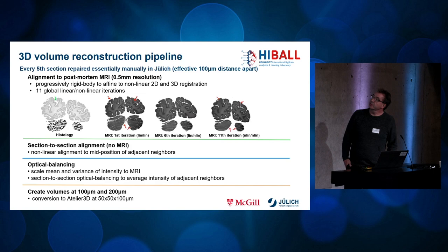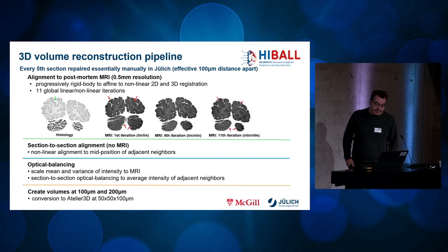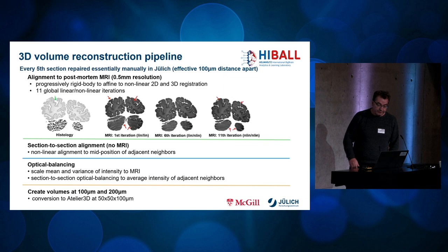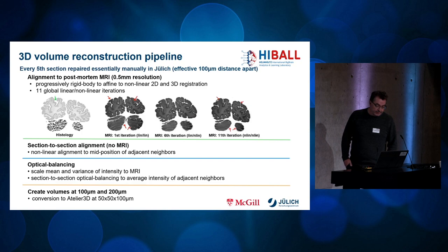For the computation of the 3D reconstruction, every fifth section repaired in Jülich was used, which effectively corresponds to a layer spacing of 100 microns. A critical first step was to align with the post-mortem MRI scan at a resolution of 0.5 millimeters. The process started with a rigid body alignment and then progressed to fine and non-linear 2D and 3D registration steps. To achieve the desired precision, 11 global iterations, both linear and non-linear, were required. The figure on the right shows how the MNI dataset was aligned step-by-step in 2D and 3D to the histological section shown on the far left.